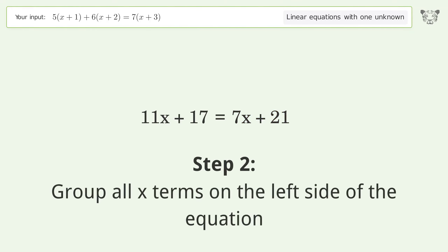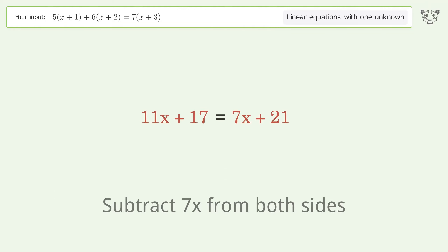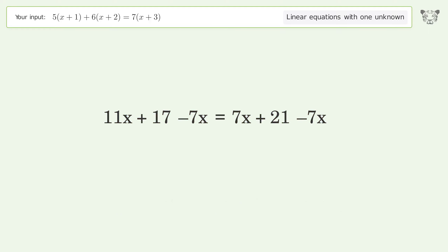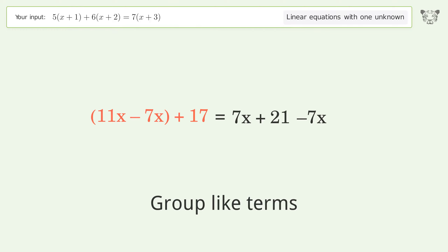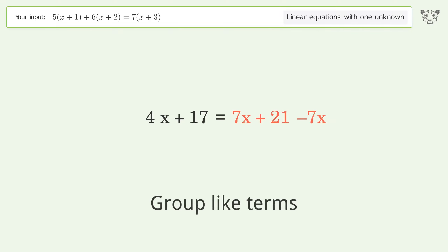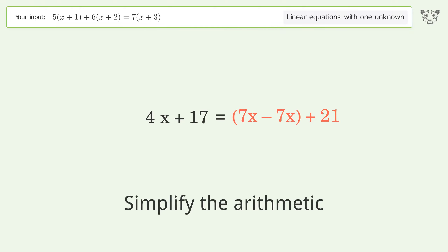Group all x terms on the left side of the equation — subtract 7x from both sides. Group like terms. Simplify the arithmetic. Group like terms. Simplify the arithmetic.